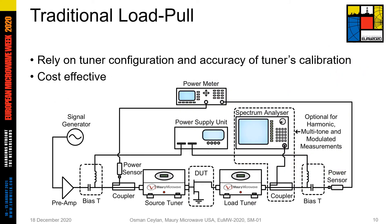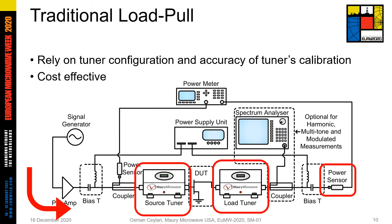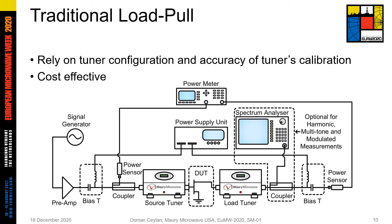The first measurement setup I will show you is a traditional load-pull setup. In this configuration, the key components from left to right are single generator, driver amplifier, input coupler, input tuner, output tuner, and power sensor. Usually, software controls all equipment to automatize the measurement session. The tuners set the source and load impedance values at the transistor's input and output. The signal generator and driver amplifiers provide the RF signal to drive the transistor. The delivered power to the DUT is measured by the input coupler and power sensor. The software calculates the impedance values based on tuner positions. Since the system measures the output power, delivered power, DC power, and impedance values at the source and load, it can calculate important performance parameters such as efficiency and output power to display on the Smith chart using contours.